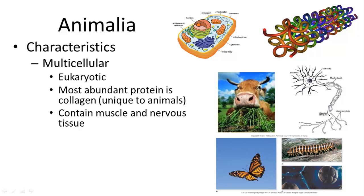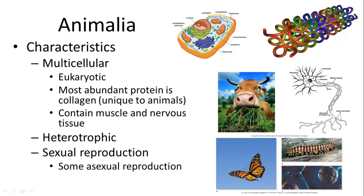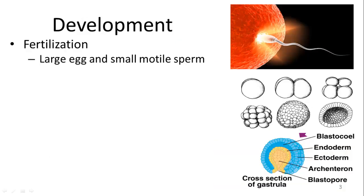Most animals also contain muscle and nervous tissue. They are heterotrophic — they cannot produce their own energy from chemicals or sunlight, so they have to consume other things. They reproduce sexually, though some animals can also reproduce asexually.